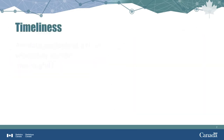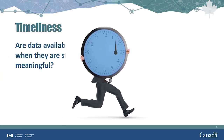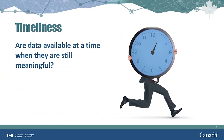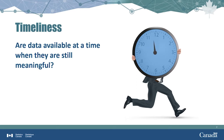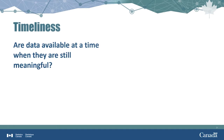Timeliness is the delay between the time when the data are meaningful and when they are available. For example, school bus authorities need up-to-date weather forecasts very early in the morning to make good decisions about whether to cancel school buses. Likewise, parents need to know about school bus cancellations before they head to work. Timeliness is closely related to accuracy and relevance.